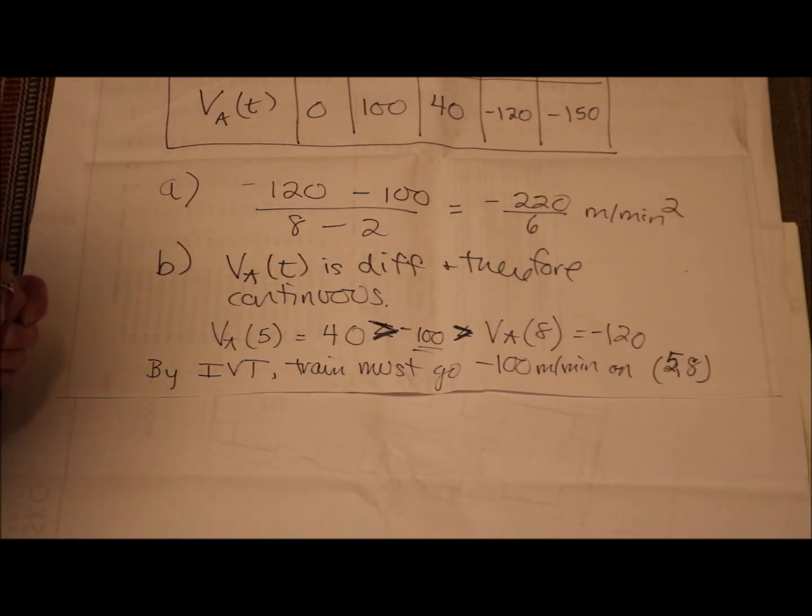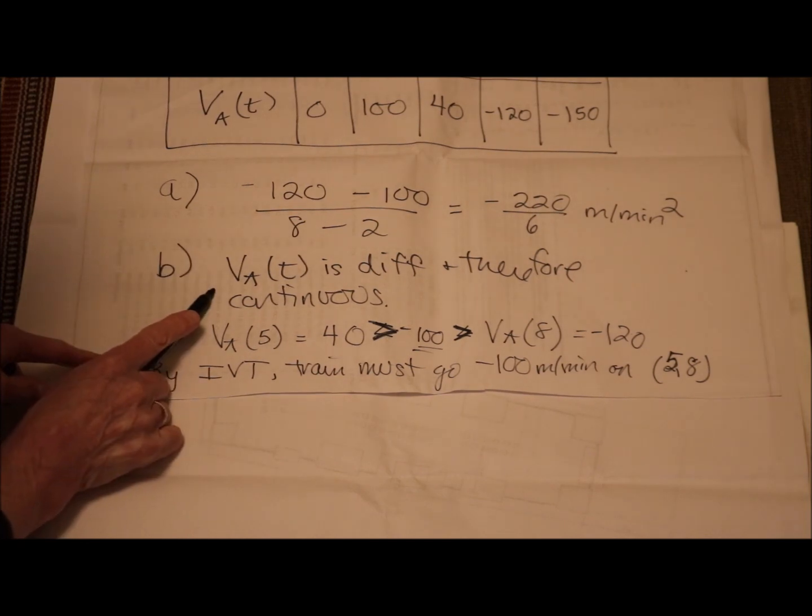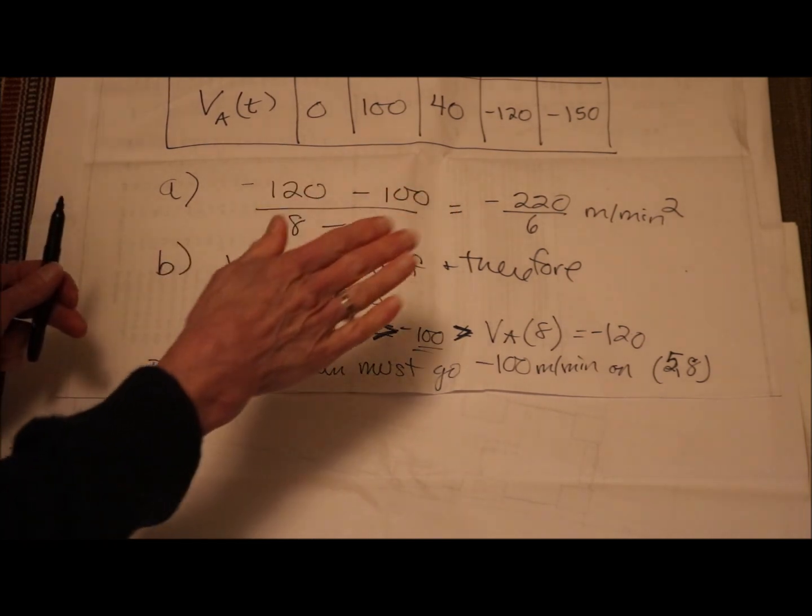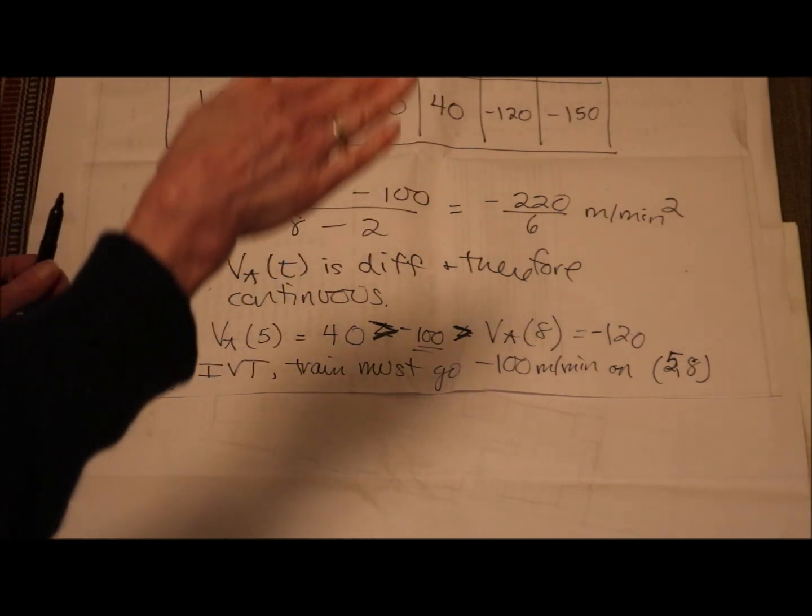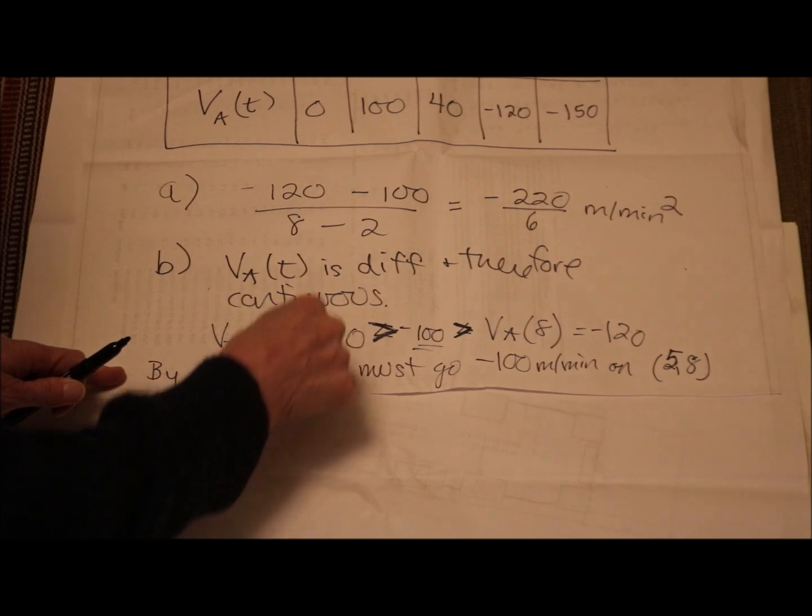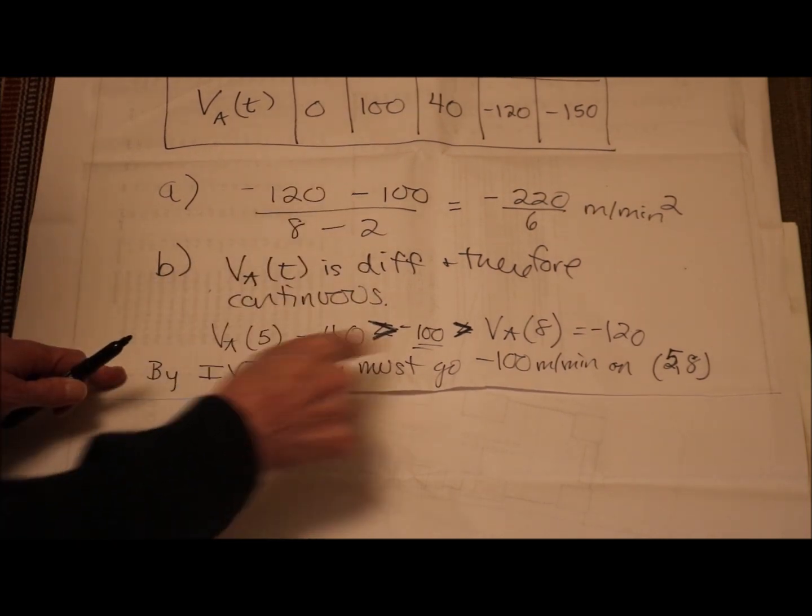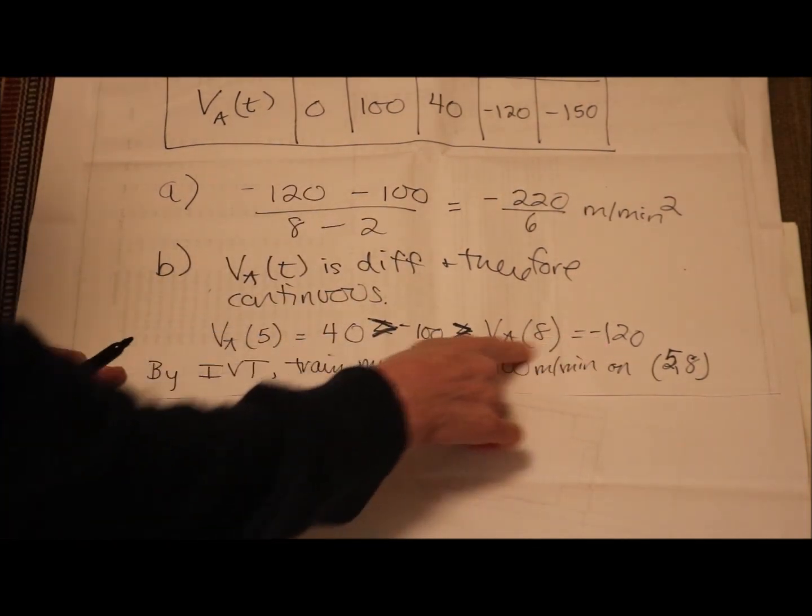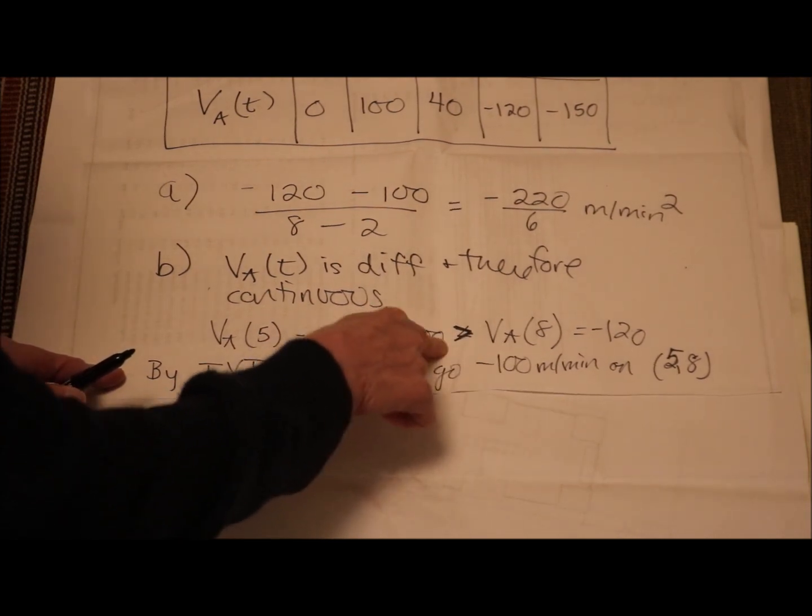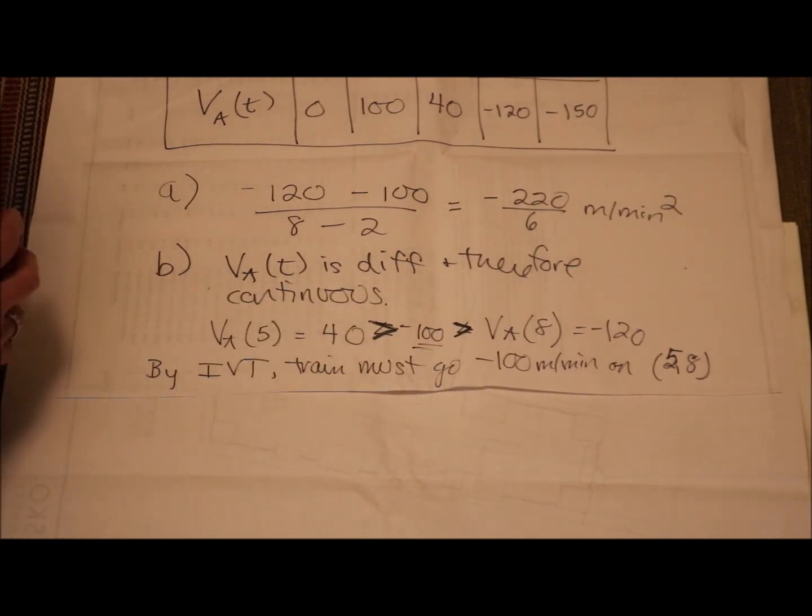Sorry, that was a little sloppy, but does that make sense? State the precondition. If you are forgetting the Intermediate Value Theorem says if I have a continuous function and I have a y value here and a y value here, then all the y values in between have to be touched. So I have a y value of negative 120 and I have a y value of 40, so I had to have touched or gone by a y value of negative 100.